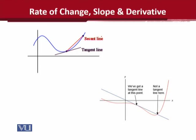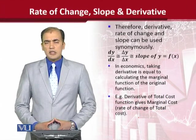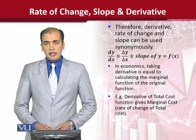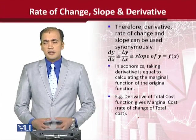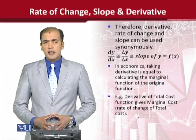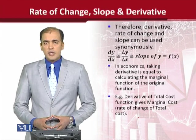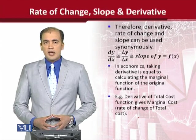ہمارا concern tangent سے ہے جو actually slope کو show کرتا ہے اور جس کے لیے derivative calculate کرتے ہیں۔ ایک اور possibility آپ کو دکھائی جا رہی ہے جس میں آپ دیکھ سکتے ہیں کہ یہ tangent ہے، whereas یہ secant بن رہا ہے جو کہ ہمارے case میں undesired ہے۔ So we have agreed that the derivative, the slope, and the rate of change are quite similar — roughly speaking, the same thing.